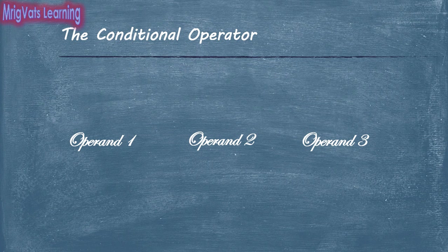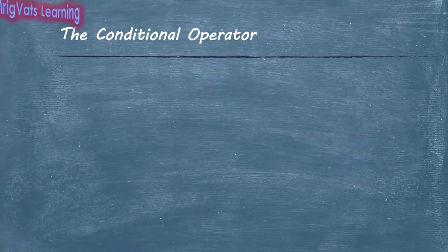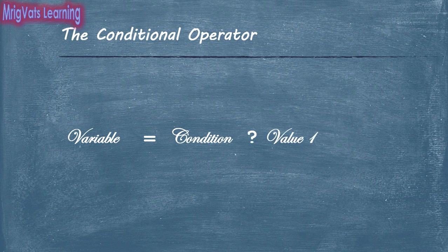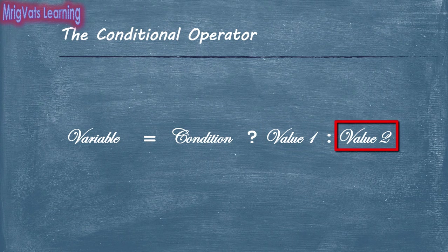The most commonly used ternary operator uses the question mark colon symbol. The first operand is a condition while the second and the third operands are values. When used, it takes the form: variable = condition ? value1 : value2. Based on the evaluation of the condition, the operator assigns one of the two values separated by the colon symbol. If the condition evaluates to true, value one is assigned to the variable; else value two is assigned.